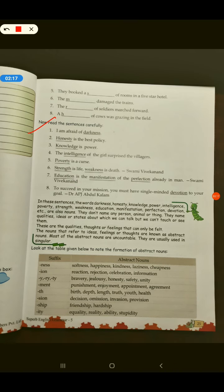Okay, we will start from here. Now read the sentences carefully. I am afraid of darkness. Honesty is the best policy. Knowledge is power. The intelligence of the girl surprised the villagers. Poverty is a curse. Strength is life. Weakness is death by Swami Vivekananda.